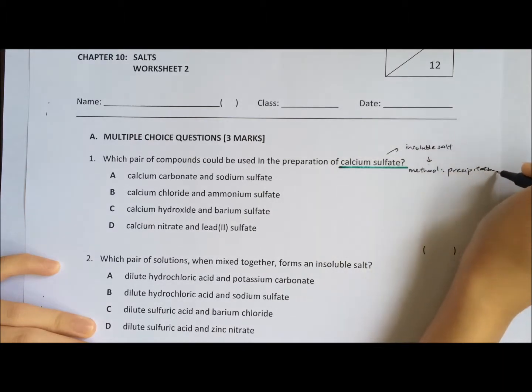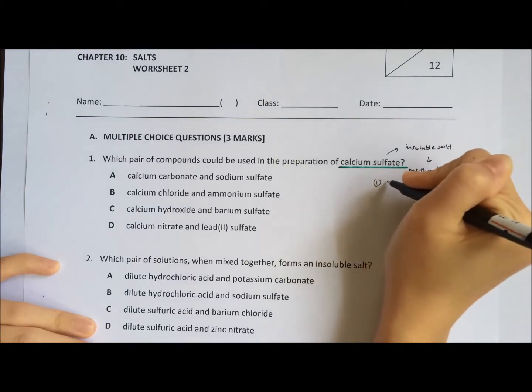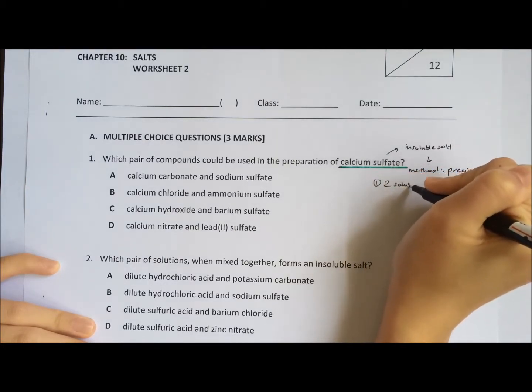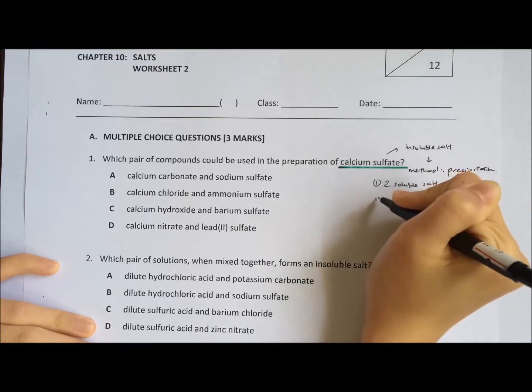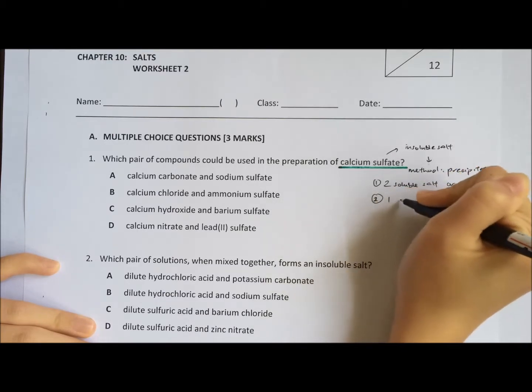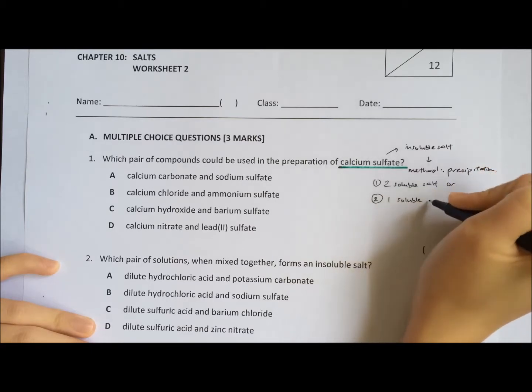So for precipitation, there are two possible ways. The first way is two soluble salts, or the second way will be one soluble salt and one acid.